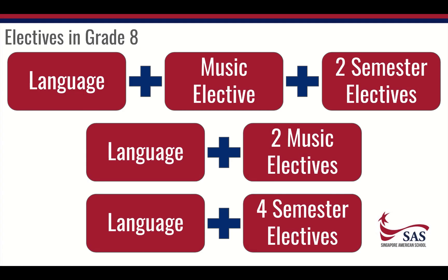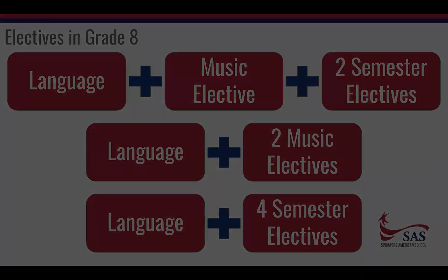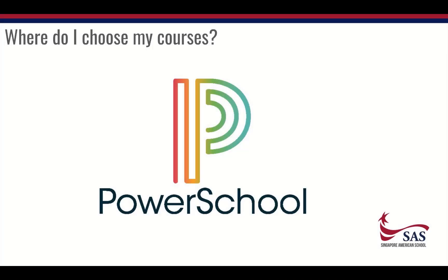Here again are the three different ways you can build your electives in grade eight. We'll do a quick overview of how you choose your courses. You'll do this in PowerSchool if you are a returning student, or in a Google Form if you are a new student, but the process is basically the same.